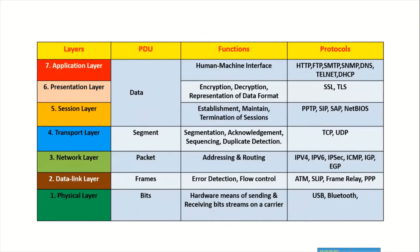At the data link layer, packets are divided into frames and encapsulated with MAC addresses. This layer establishes a logical connection, sends frames, and expects an acknowledgement for each frame. If no acknowledgement is received, it resends the frame. It also handles flow control. The main functions are error detection and flow control. Protocols used include ATM, SLIP, Frame Relay, and PPP.